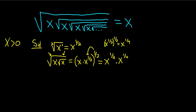When you have multiplication like this, and the bases are the same, you can just add the exponents. This is x to the 1 half plus 1 fourth. Good stuff.